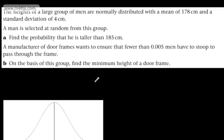In the next few videos, we're going to look at some real-world applications of a normal distribution. In this question, we're told the heights of a large group of men are normally distributed with a mean of 178 centimeters and a standard deviation of 4 centimeters. A man is selected at random from this group.